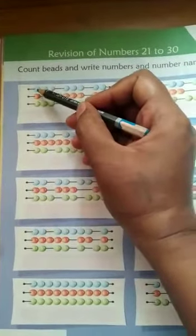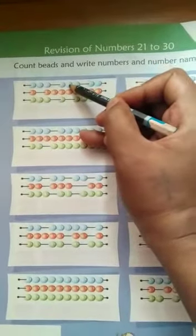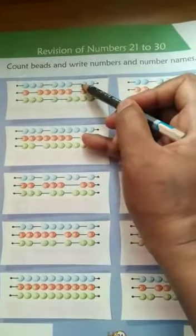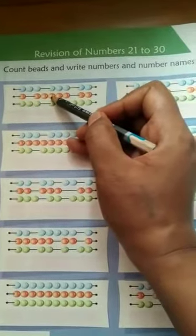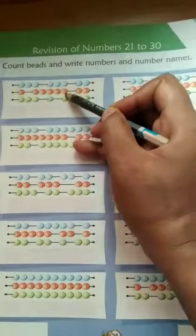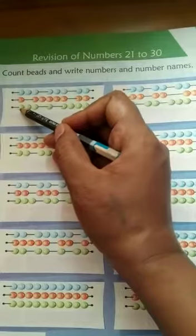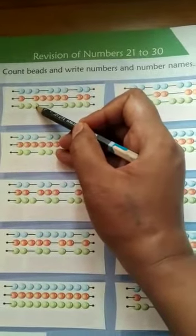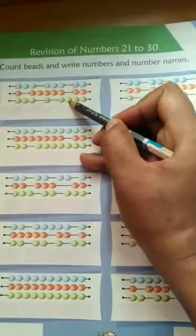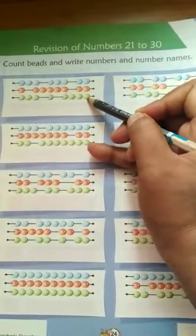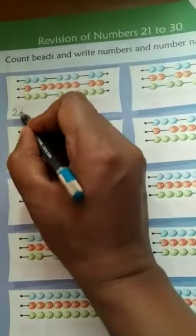See, page number 24, you will be counting the beads here. Like 1, 2, 3, 4, 5, 6, 7, 8, 9, 10, 11, 12, 13, 14, 15, 16, 17, 18, 19, 20, 21, 22, 23, 24. You will be writing here 24.